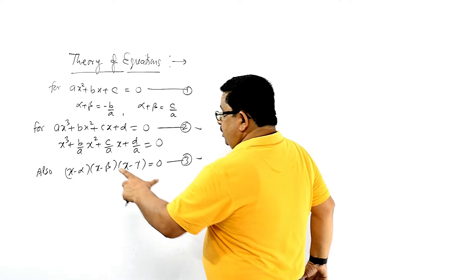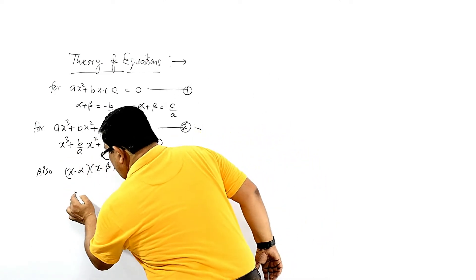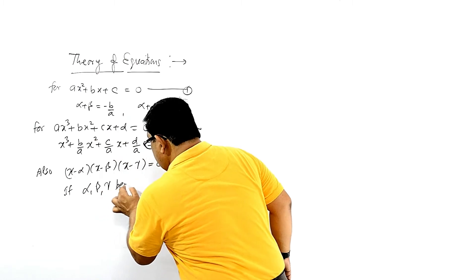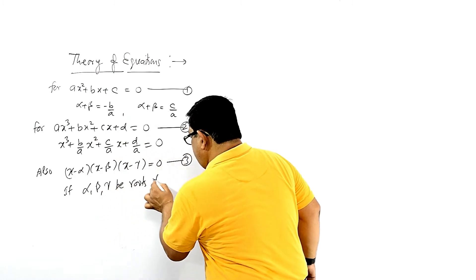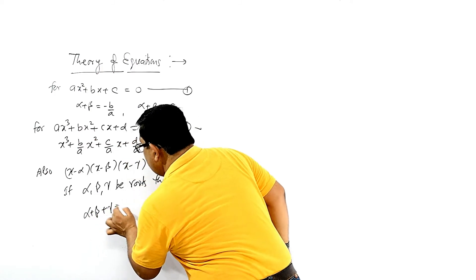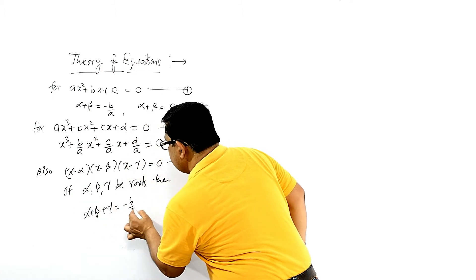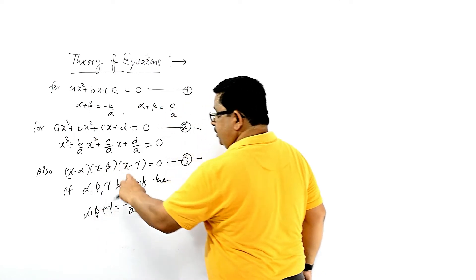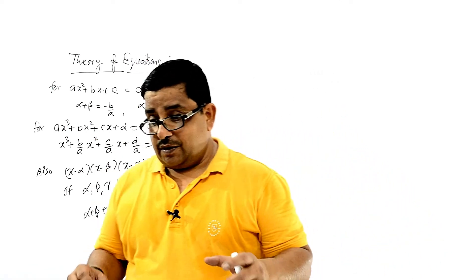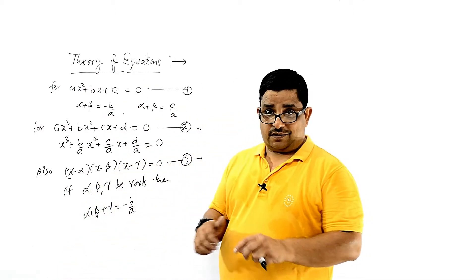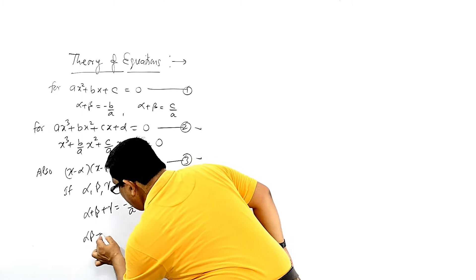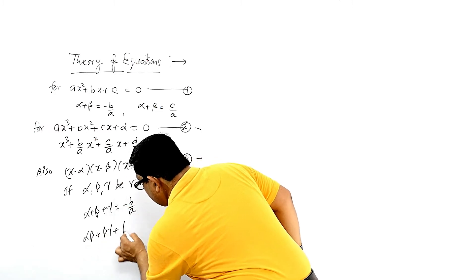So if alpha, beta, gamma are the roots, then: alpha + beta + gamma = -b/a; and the sum of products of pairs — that is alpha·beta + beta·gamma + gamma·alpha — equals c/a; and the product alpha·beta·gamma equals -d/a, which is (-1)³ times d/a.